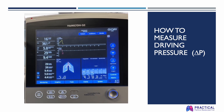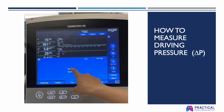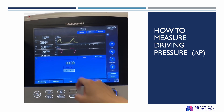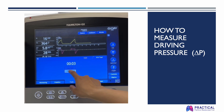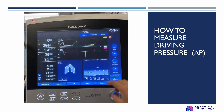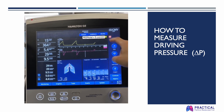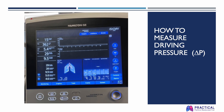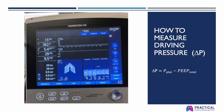To measure total PEEP, go to Tools and press Expiratory Hold. Wait 3 seconds and look for a straight line on the pressure-time waveform. Hit Expiratory Hold to stop the maneuver. Use the knob to scroll over to the flat line on the pressure-time waveform to determine your total PEEP. Unfreeze the screen when you're done reviewing the waveform. Using the measurements obtained from this example, you can calculate driving pressure using the equation: delta P equals plateau pressure minus total PEEP. In this example, it equals 26 centimeters of water minus 5 centimeters of water, which gives you a total driving pressure of 21 centimeters of water.